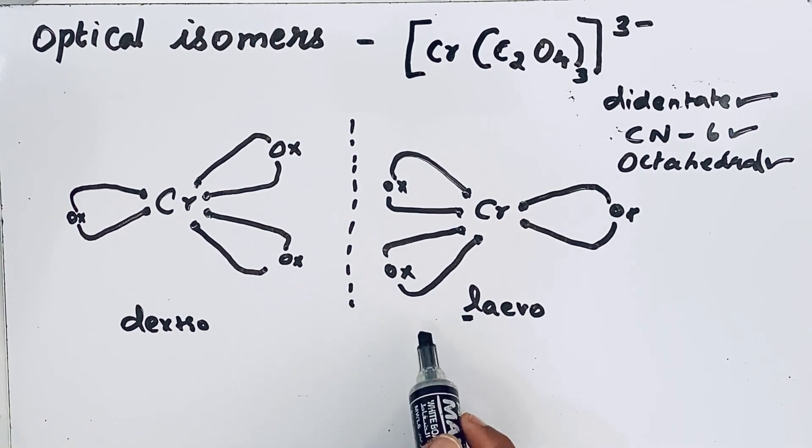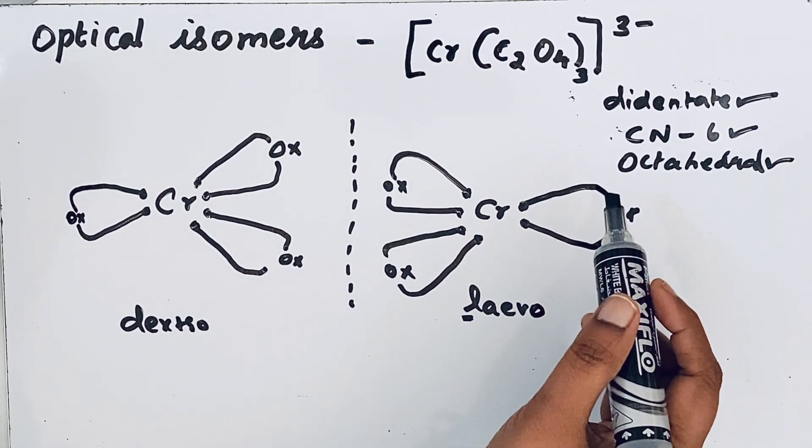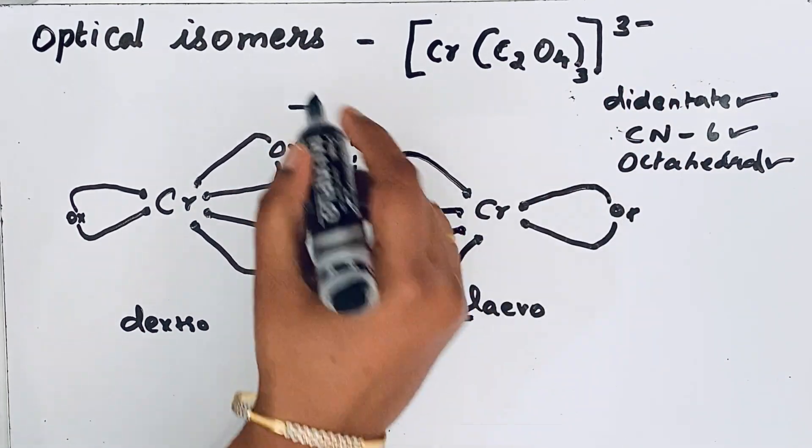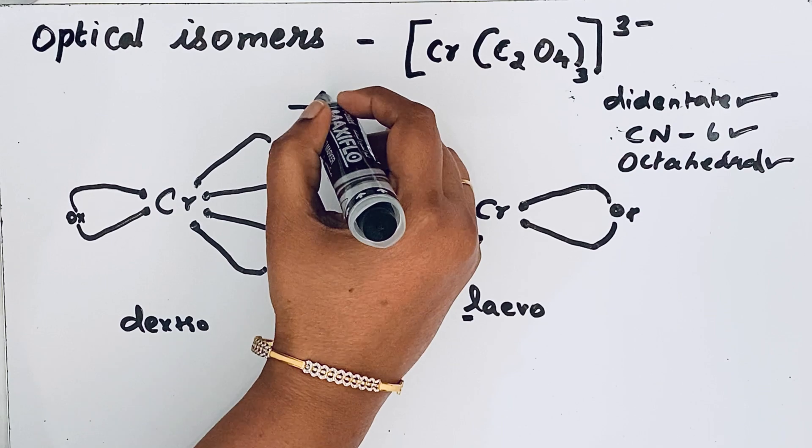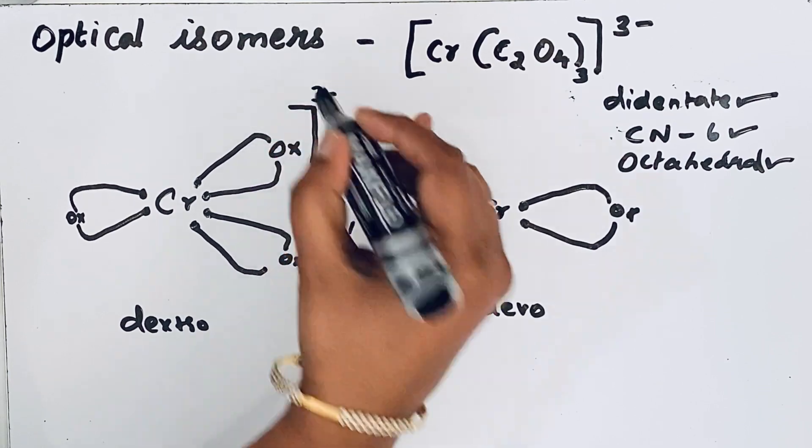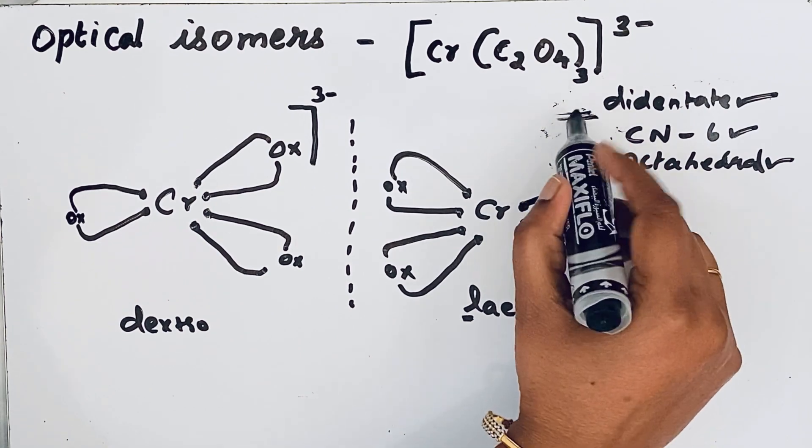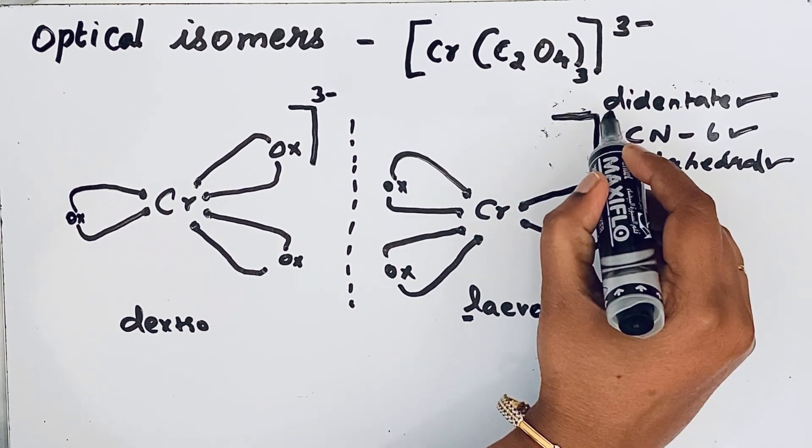So these are the two optical isomers of Cr(C2O4)3^3-. So the charge is there, right? So this charge we should write on the right side, 3 minus. And the same way, we draw for this side also, 3 minus.